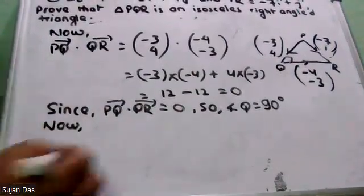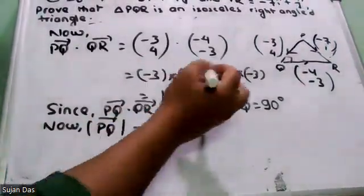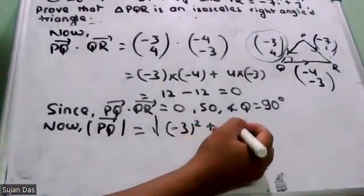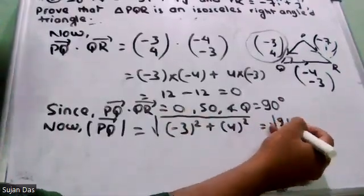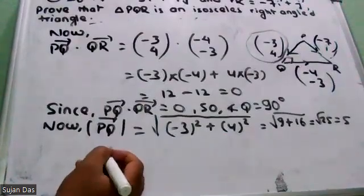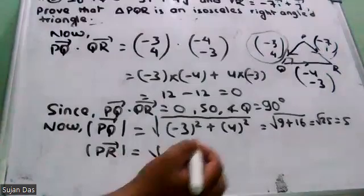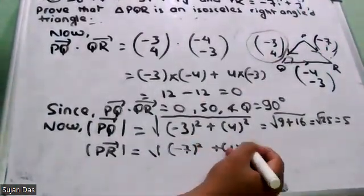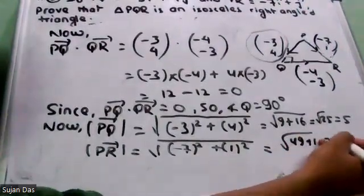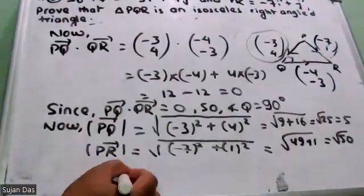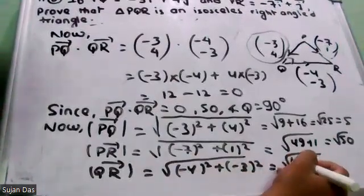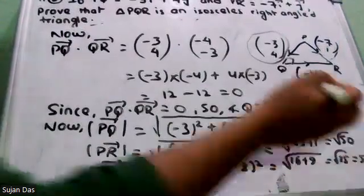Magnitude of PQ vector: root under matthiko square plus all of the square = root under 9 plus 16 = root under 25 = 5. Similarly, magnitude of PR vector: root under minus 7 squared plus 1 squared = root under 49 plus 1 = root under 50. And magnitude of QR: root under 16 plus 9 = root under 25 = 5.